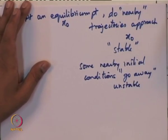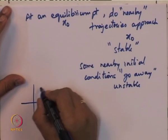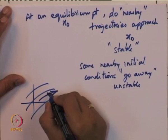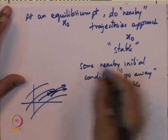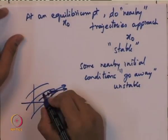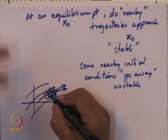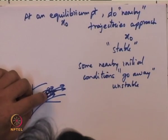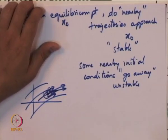These stability studies are relevant only at equilibrium points. Consider R²: if a point is not a singularity, it will not remain there — the vector field at that point is non-zero, so it will move. And since f is continuous, nearby points also have non-zero vector fields. So the question about stability automatically applies only to equilibrium points.